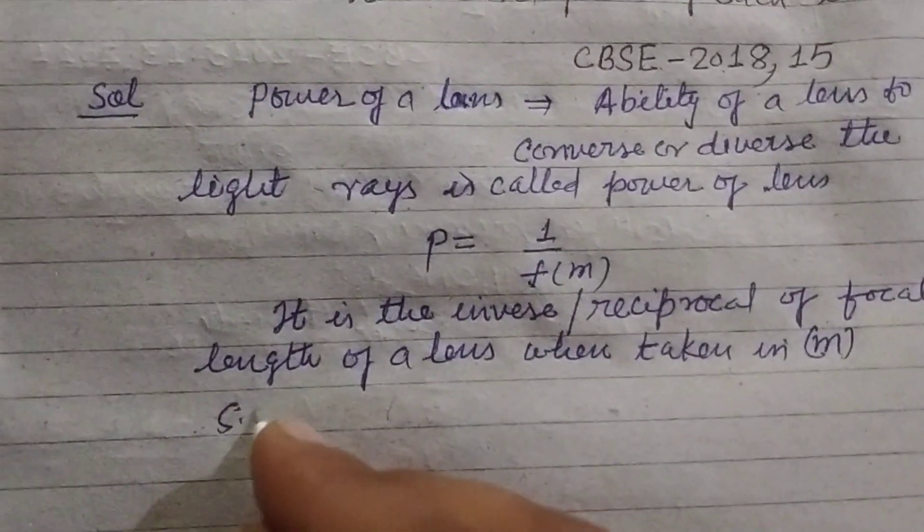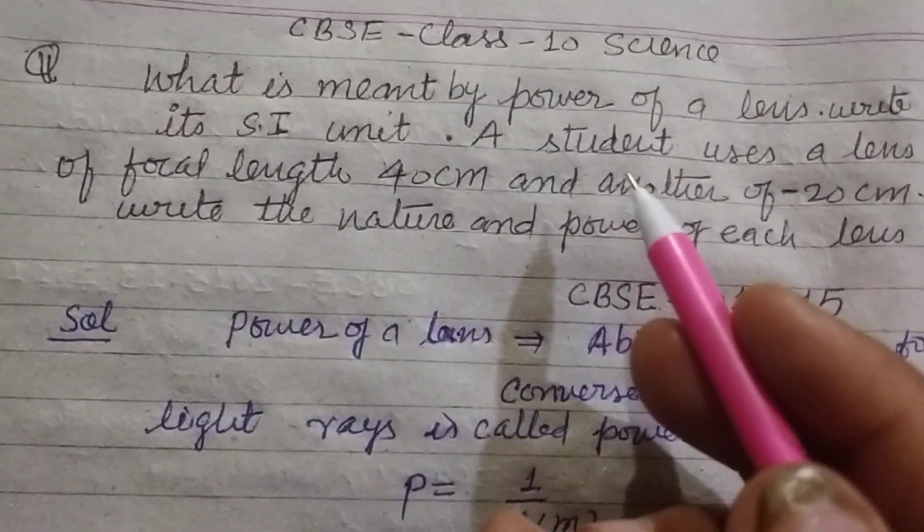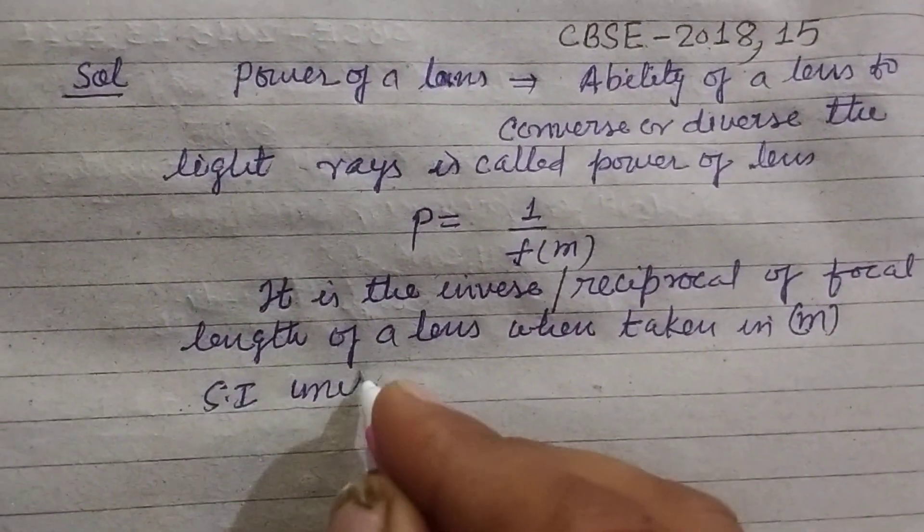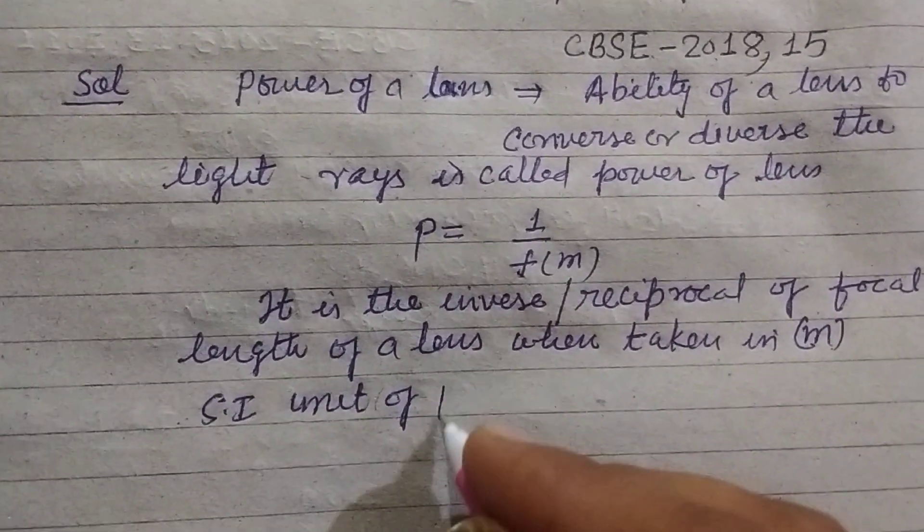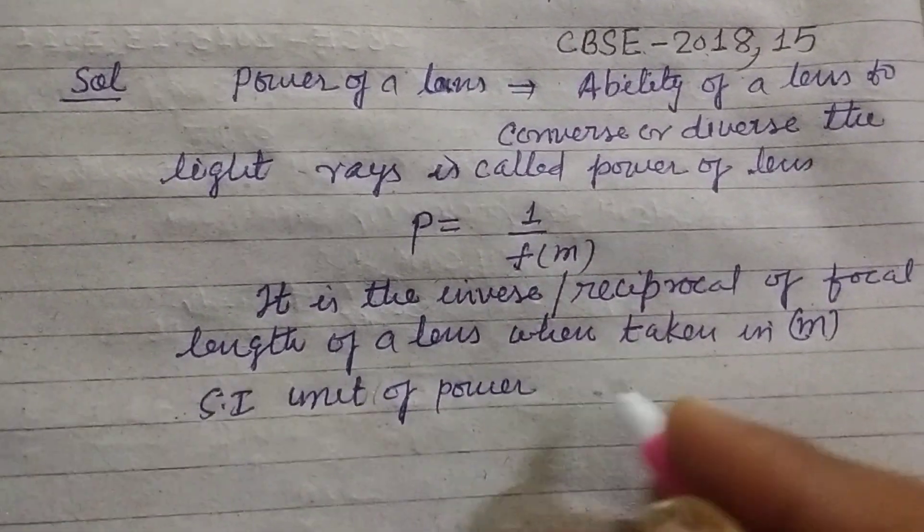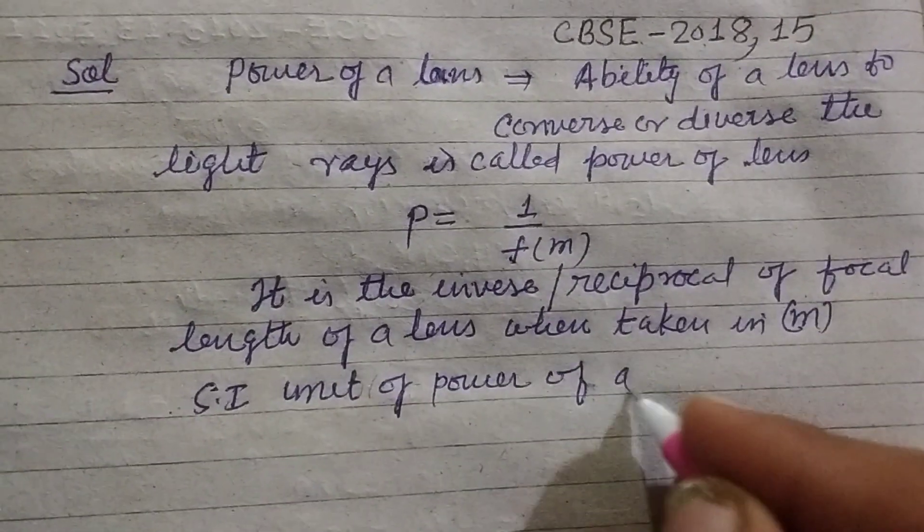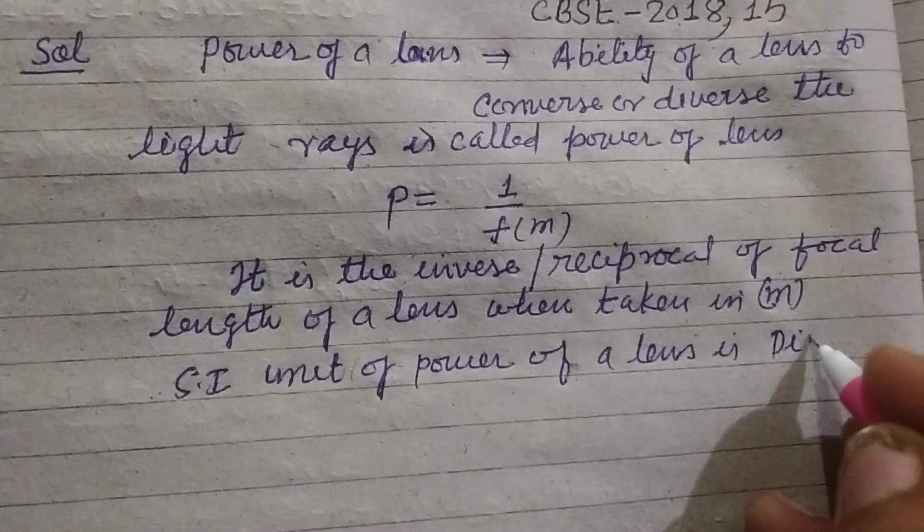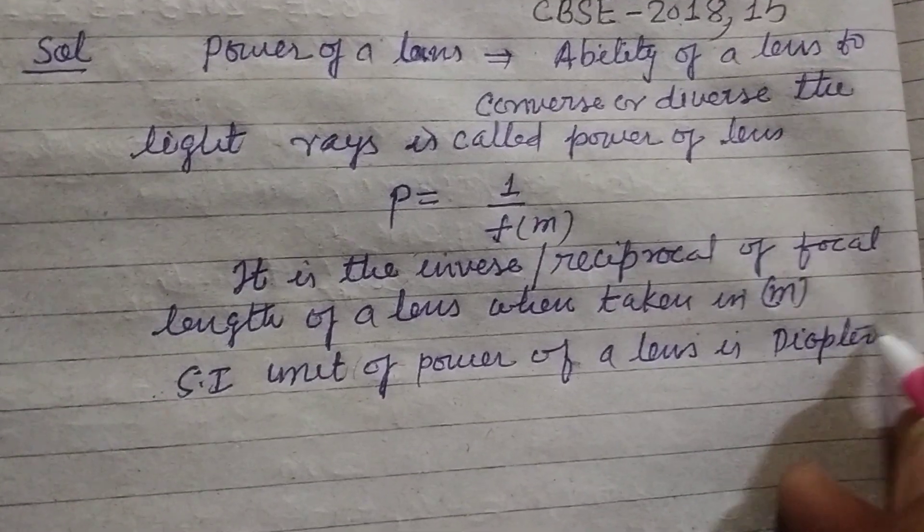SI unit - the question is asking SI unit of the power of lens. SI unit of power of a lens is diopter, D.